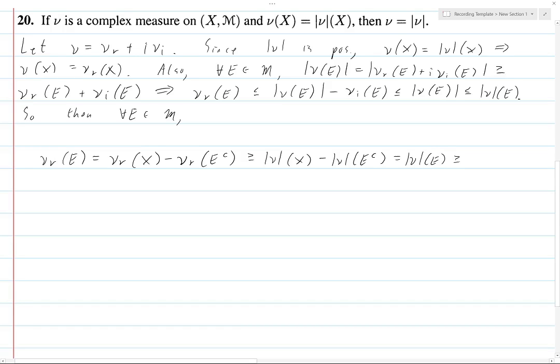But what is this? We know that this must be greater than or equal to ν_r of e. By the same thing again that we proved before here, but now we're actually applying it to e. But look, we've got the same thing on both sides of this inequality. Thus, equality holds throughout.